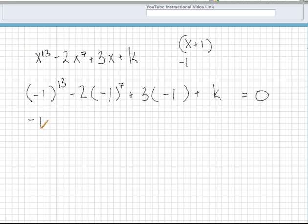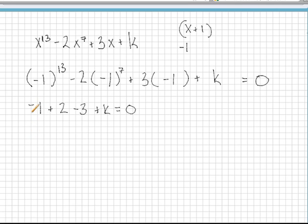So what we end up with is negative 1 plus 2 minus 3 plus k equals 0. If you combine like terms on this side,